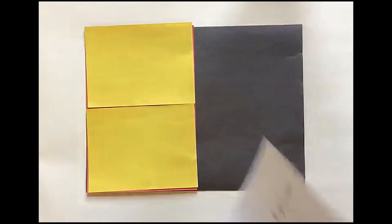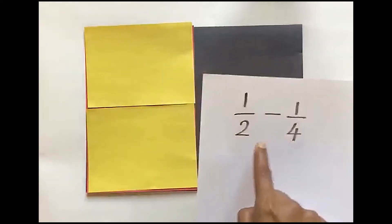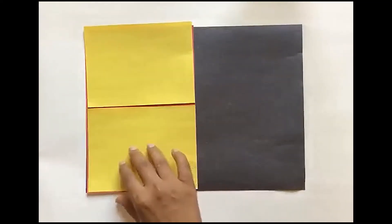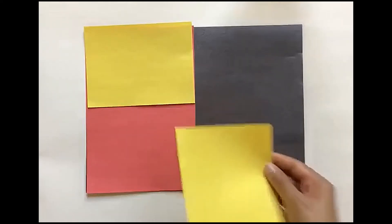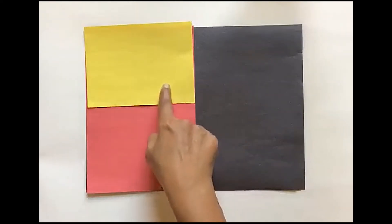Now if I look back into the problem, I need to remove 1 fourth from 1 half. So now it's easy to remove the 1 fourth and my final answer is what's left in there, which is 1 fourth.